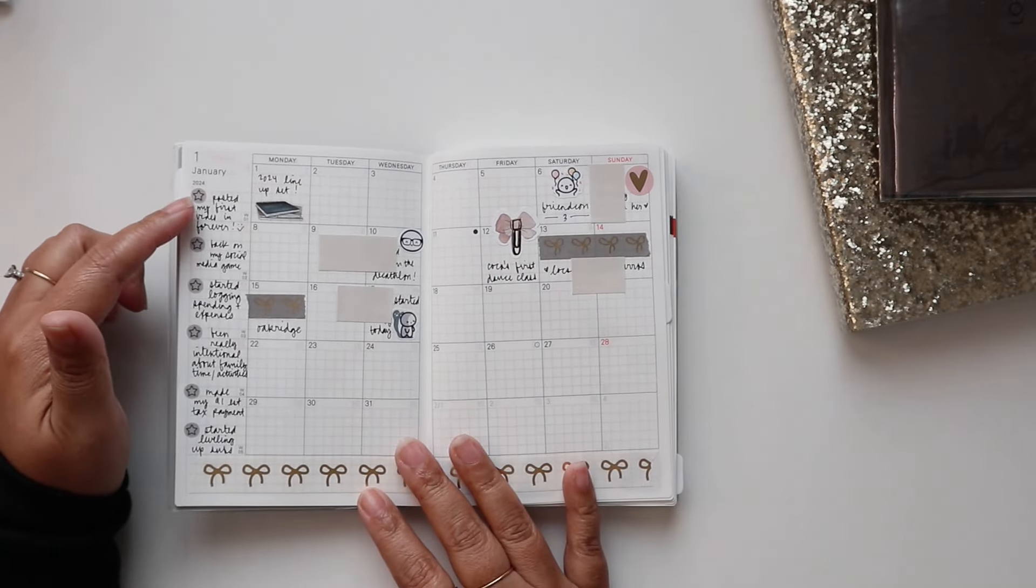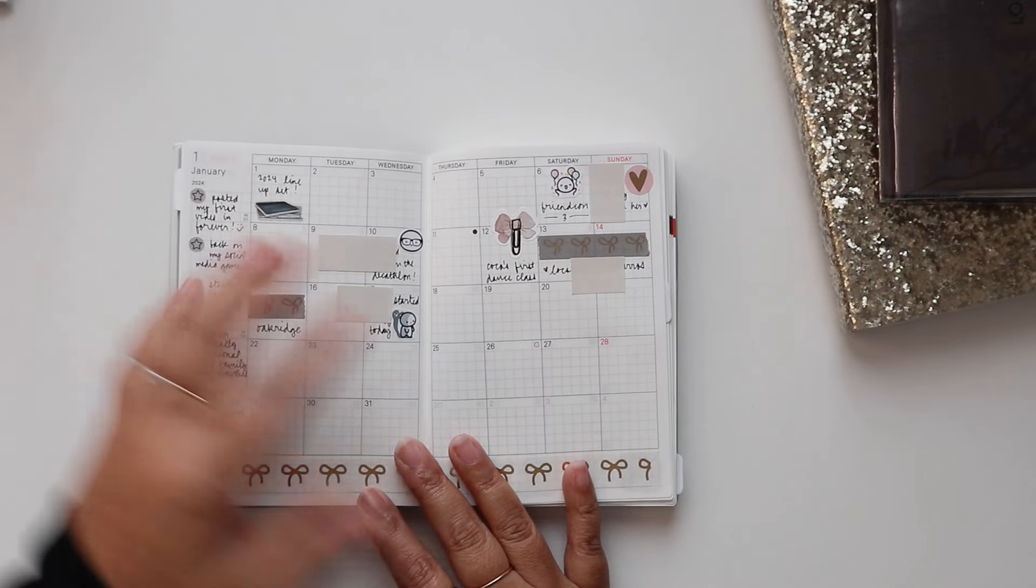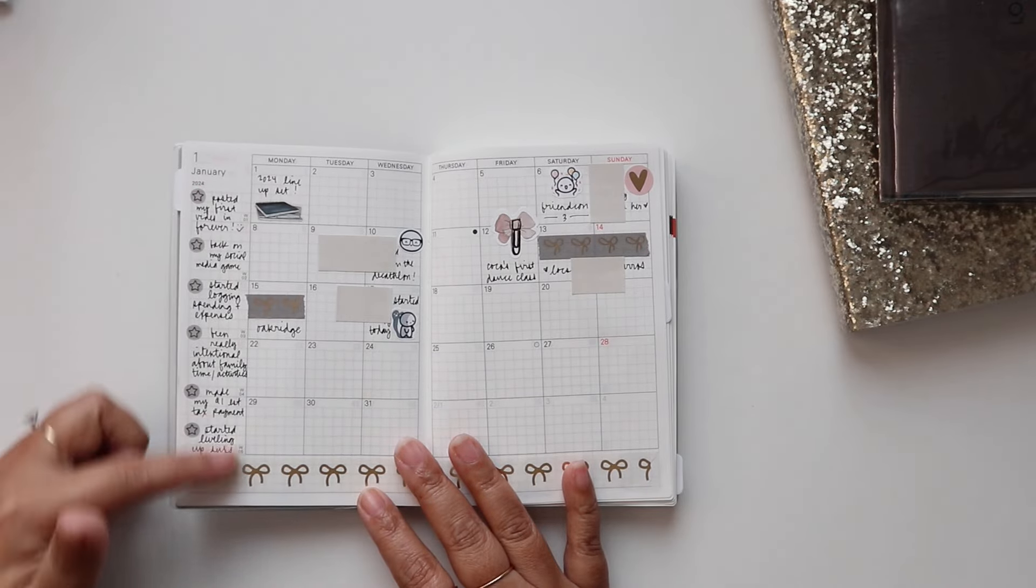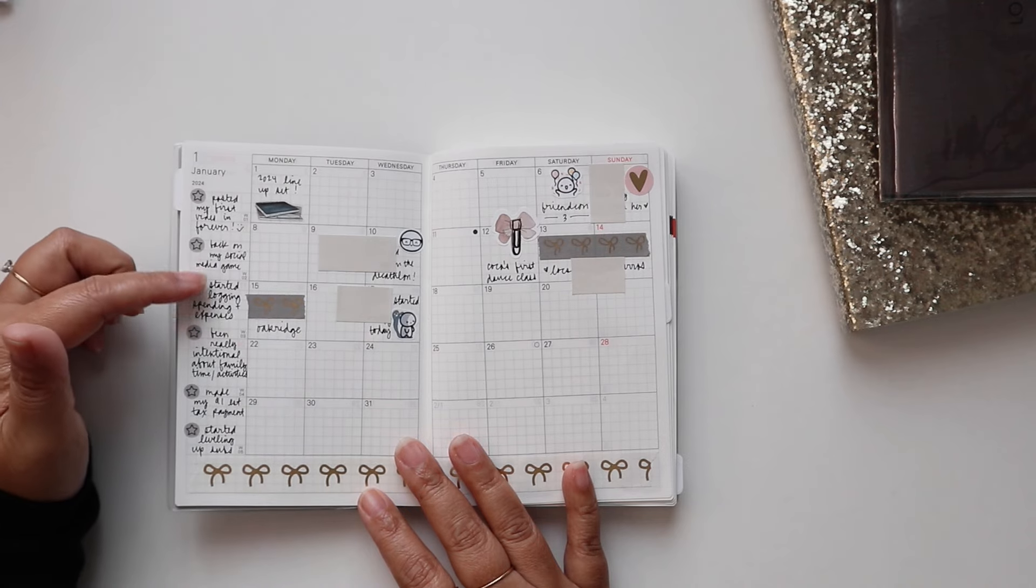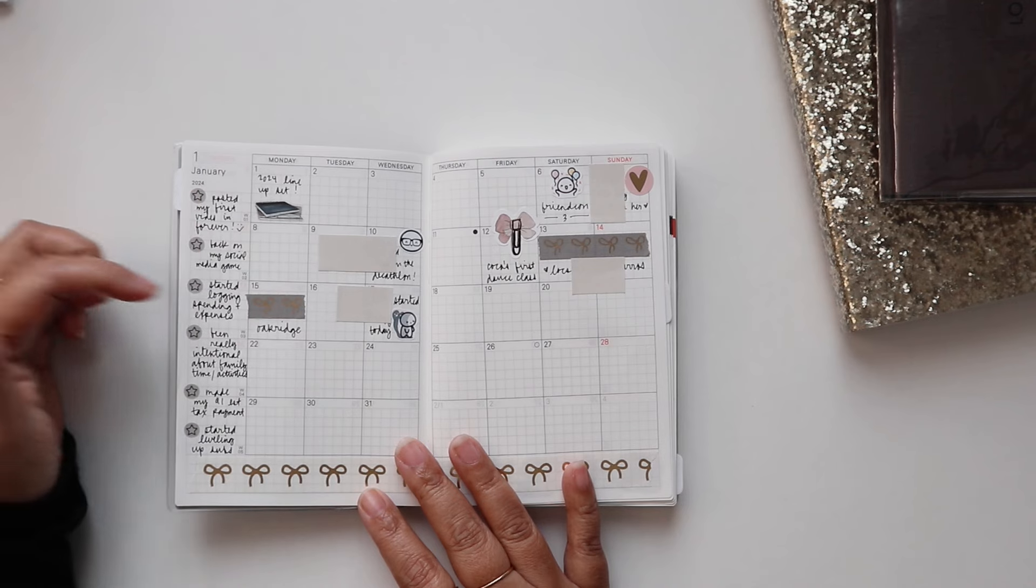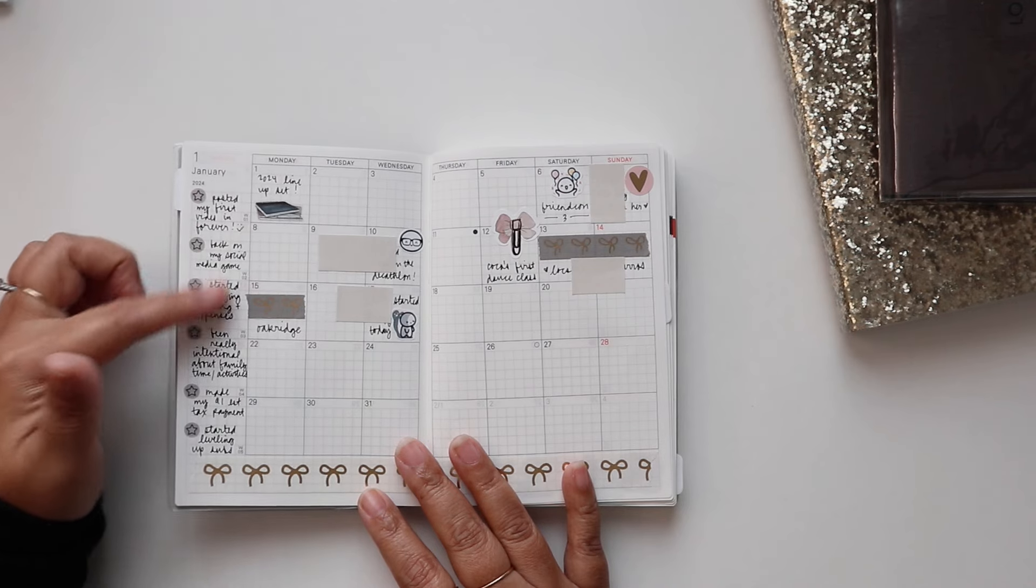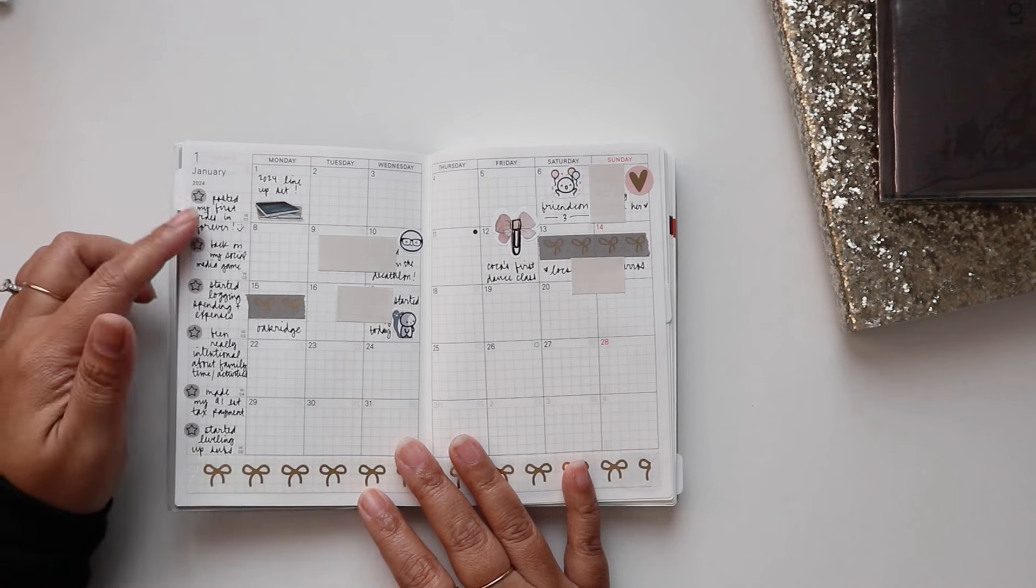Another thing I really liked about this spread and this planner is this side column and I use this for my wins. So anything that I did during the month that I'm kind of proud of, I would put a little star and write it here. It's like giving myself a little award.